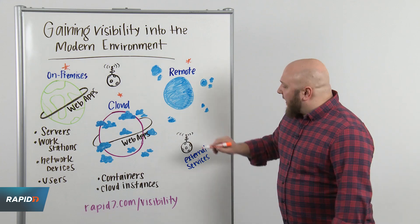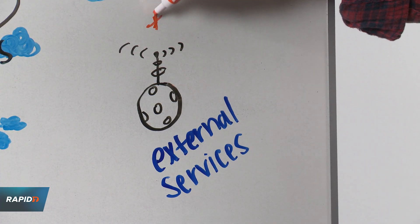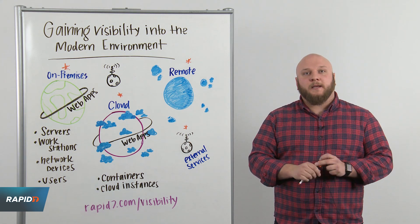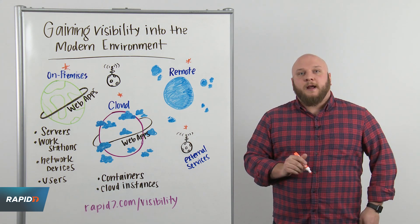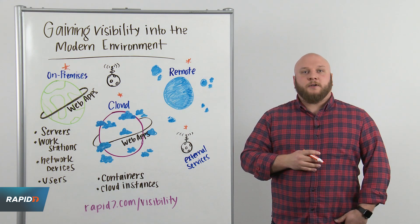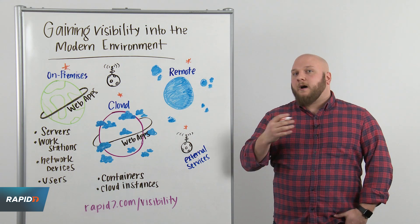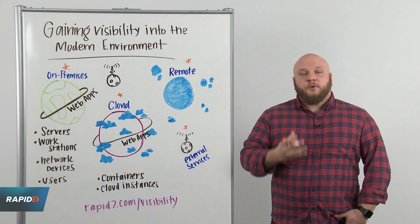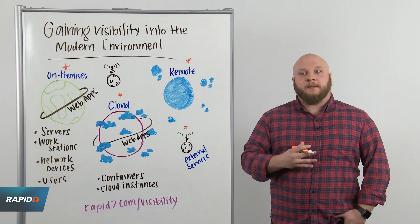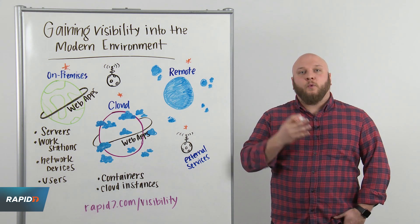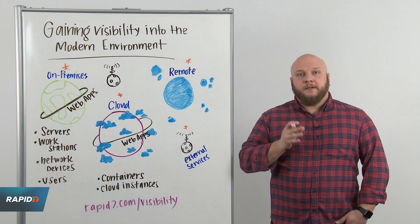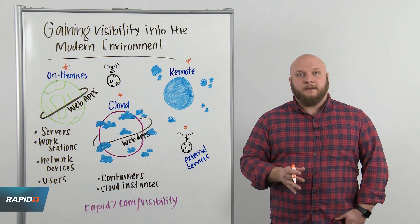The final stop we'll be making today is external services. It might be small on the map, but in real life it's a pretty big concern. As we modernize our businesses, we start working with third parties for services — we contract Office 365, Okta, etc. Although we're not hosting these services, we still need visibility into them, and most importantly, we need visibility into which of our users are using them and what those users are doing. We'll need to integrate with those services directly to gain that visibility.